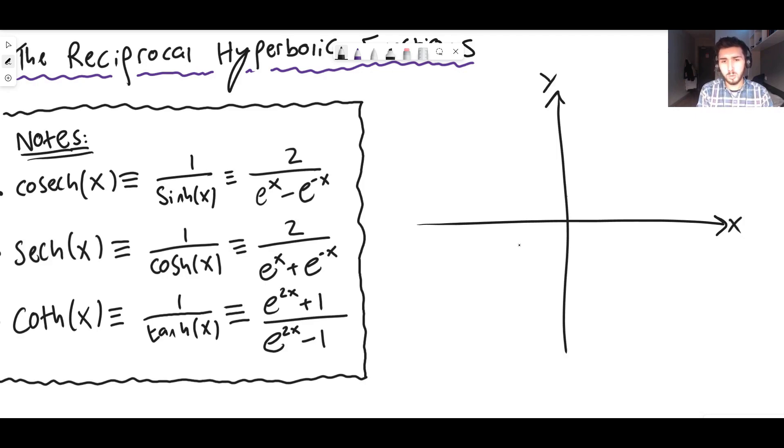Coth looks a little bit like also the graph of y equals one over x cubed but it actually has an asymptote at one and minus one which I'll elaborate on in a second.